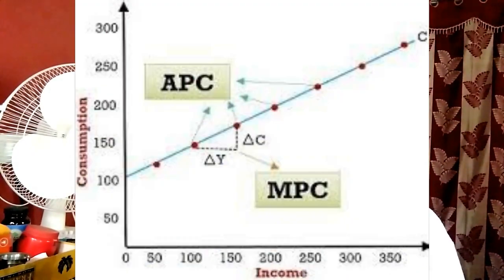Why is MPC always less than APC? In the standard Keynesian model, MPC is less than the average propensity to consume because in the short run, some consumption does not change with income.